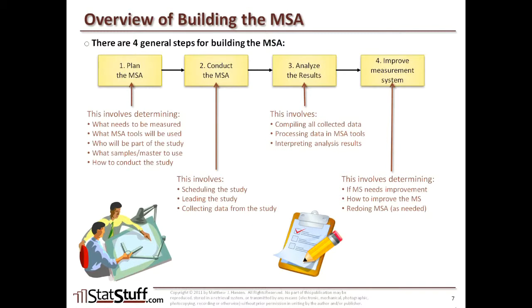If we're making changes because we didn't trust the reliability and the system failed the MSA, that means we might have to redo the MSA. Redoing it is a way to assess whether the corrections and changes we made were effective enough that we can now trust the results coming out of the measurement system.